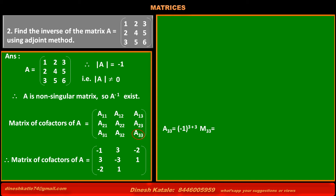Cofactor of element at third row, third column, A33 = (-1)^(3+3) × minor M33 = (-1)^6 × (1×4 - 2×2) = 1 × (4 - 4) = 0. So the value of cofactor A33 is 0.